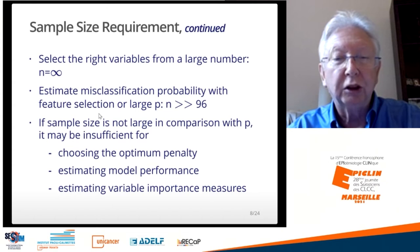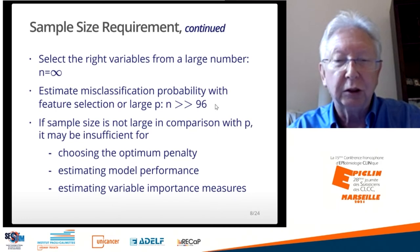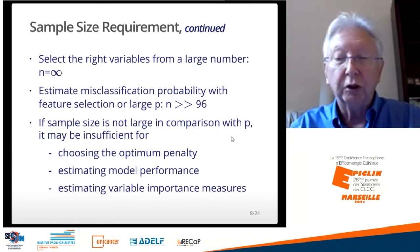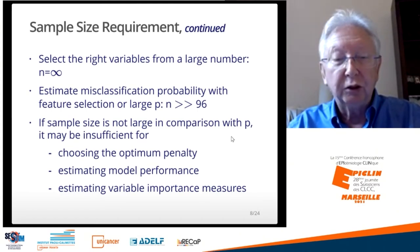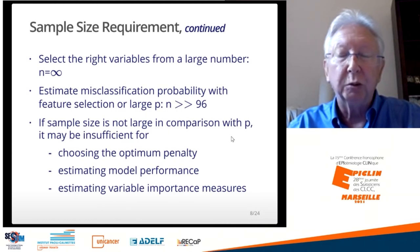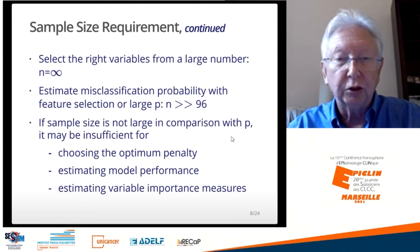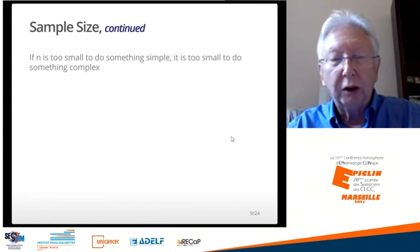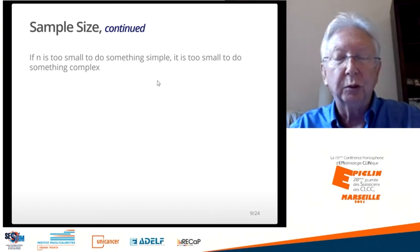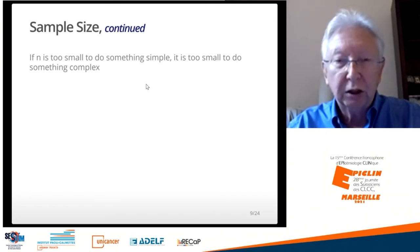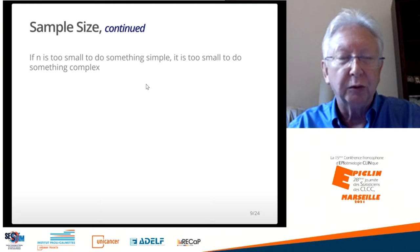If you want to estimate the misclassification probability with feature selection or a large number of candidate features, the sample size has to be much greater than 96. If the sample size is not large in comparison with the number of features, it may be insufficient for everything else — including choosing the optimum penalty, estimating model performance, and estimating variable importance measures. This is true whether you're using machine learning or statistical modeling. The overall message: if your sample size is too small to do something simple, it is too small to do something complex.